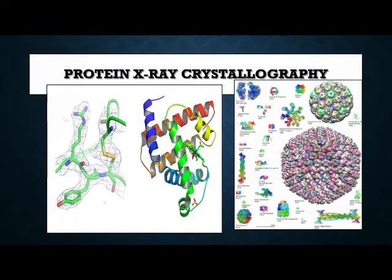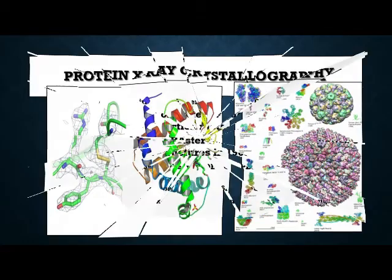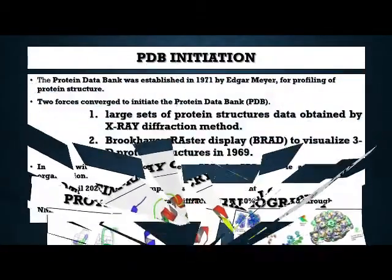On the left side you can see the hemoglobin structure obtained by X-ray crystallography, and on the right side you can see some other structures that are obtained by X-ray crystallography and are available on the protein data bank website.